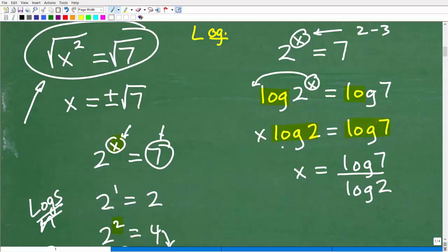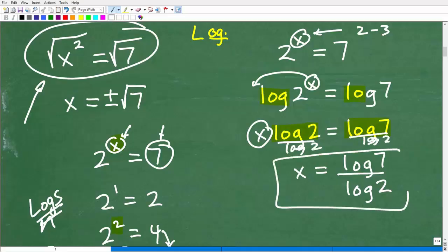So that leaves me with x times log 2 is equal to log 7. Now, if you went into your calculator and just hit that L-O-G button, 2 and L-O-G, 7, these are just going to be like decimal values. So if I want to solve for x, and that's what I'm trying to do here, I can just simply divide both sides of the equation by L-O-G, 2, just like this, and I get this as my answer. So x is equal to L-O-G, 2, divided by L-O-G, 7, divided by L-O-G, 2.